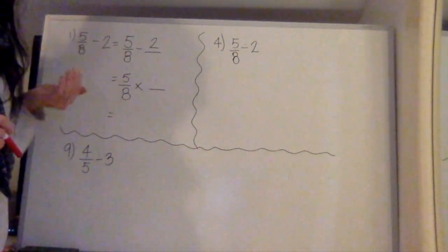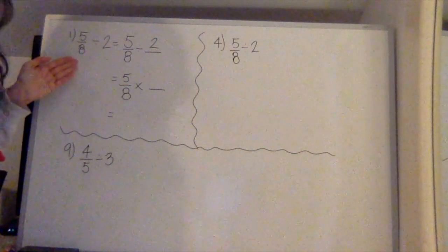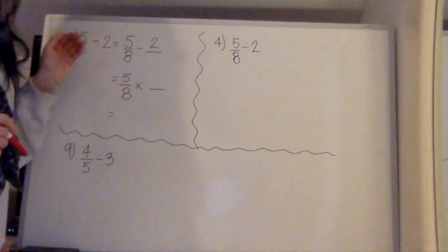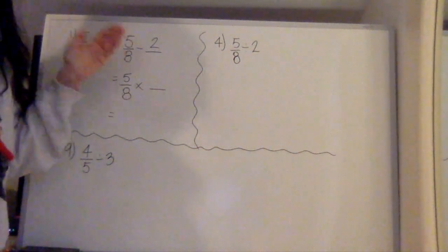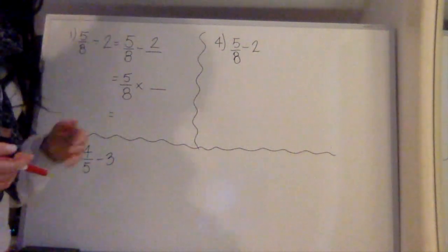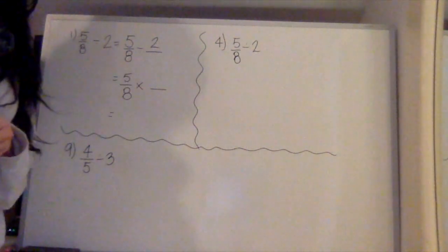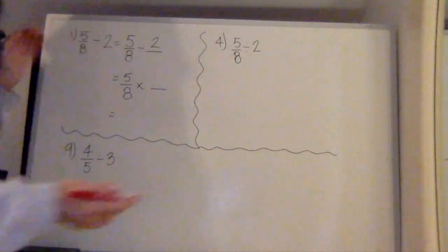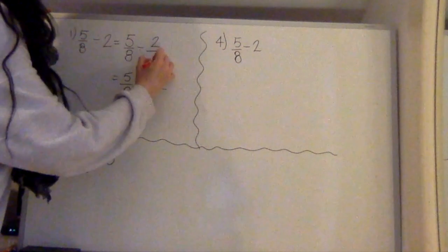So for the first section, what they want us to do is fill in these blanks. We're starting off with the problem 5/8 divided by 2. Then they're giving us 5/8 divided by 2 over something. So what should I put in that denominator? My goal is to end up with a reciprocal. So in order to get that, I need a denominator. So I'm going to put the 2 over 1.